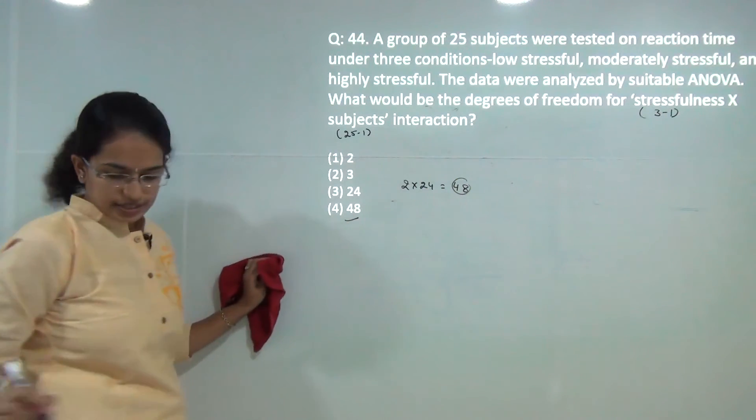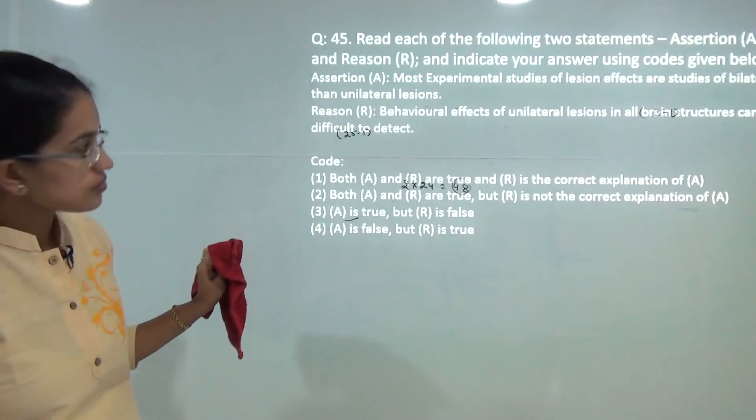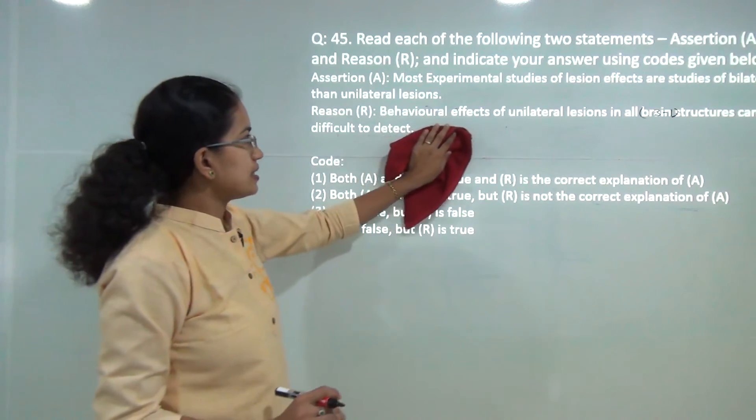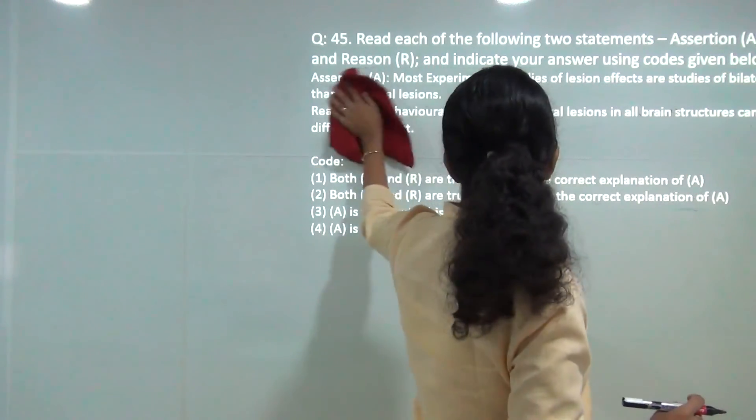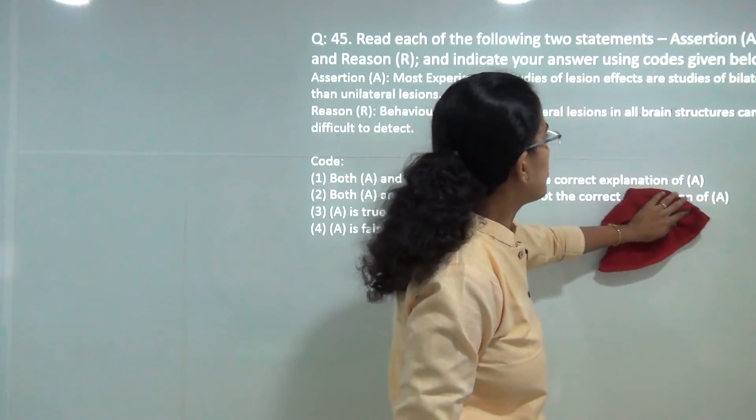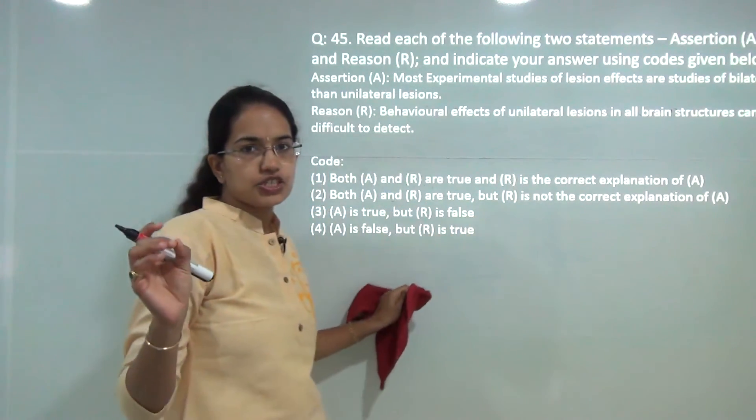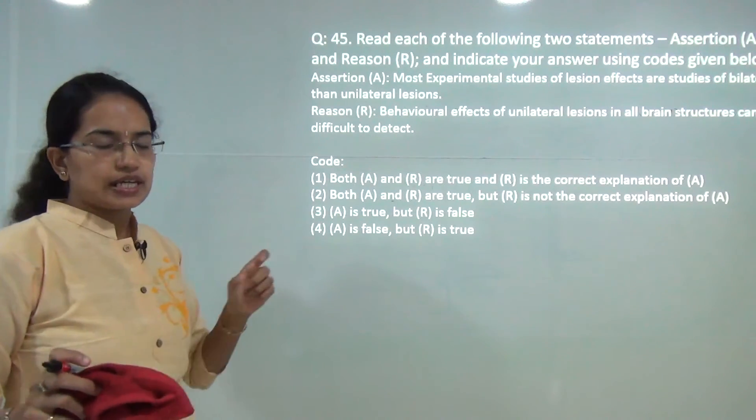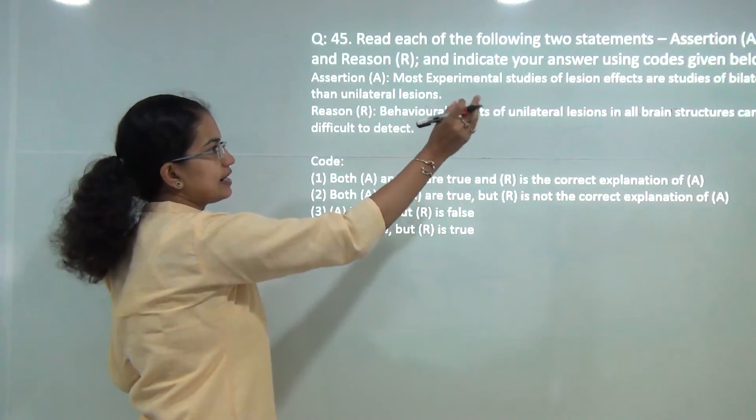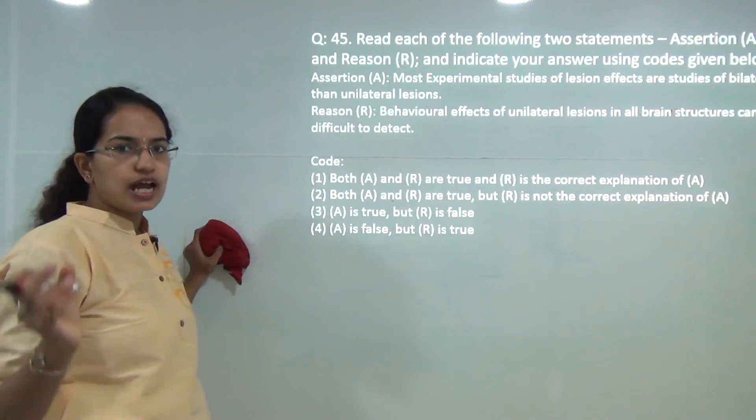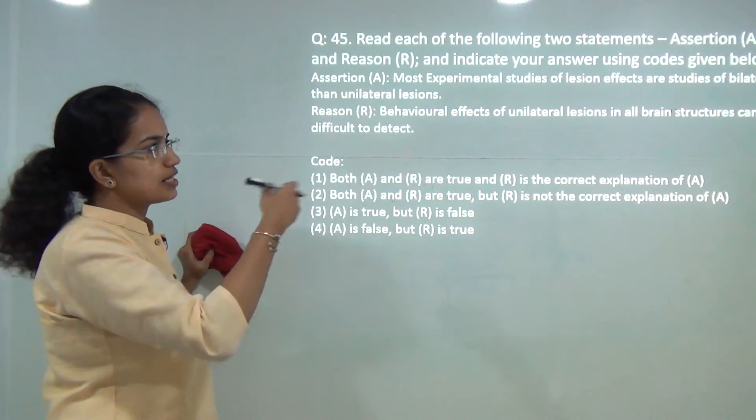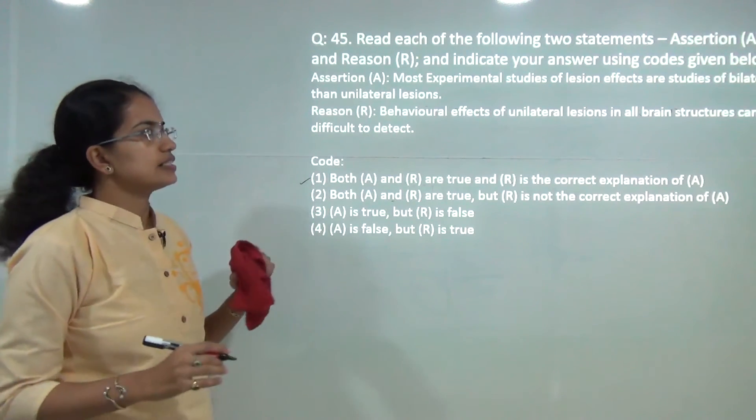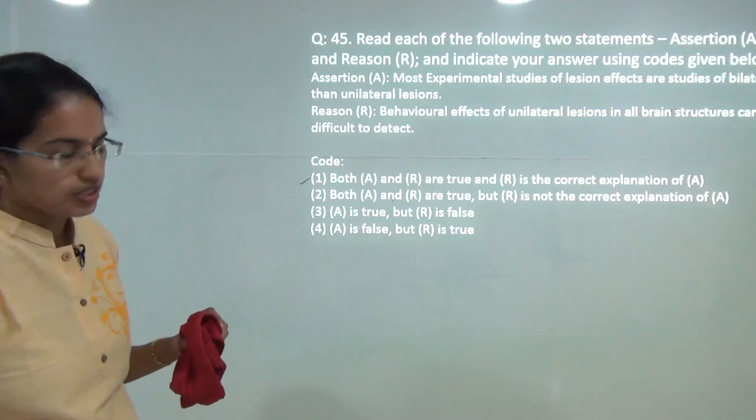Most experimental studies of lesion are studied for bilateral rather than unilateral lesions because bilateral behaviors are more easier to understand. Unilateral lesions are more milder, and since they occur only in one part of the brain, it is difficult to detect. Detection of bilateral lesion is much more easier and simpler. As a result, most of the studies are done only on the bilateral lesions rather than unilateral lesions. Both of these are correct and reason is the correct explanation.